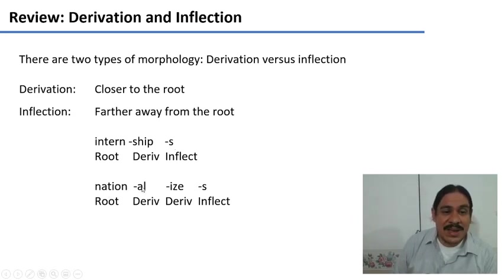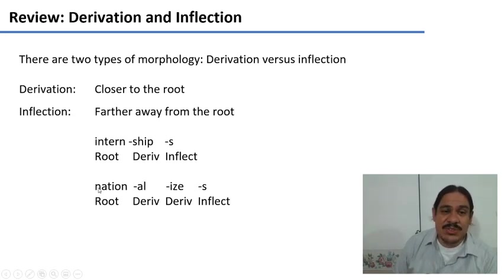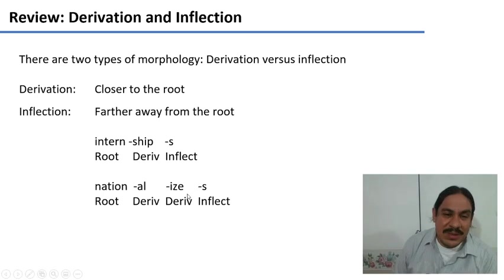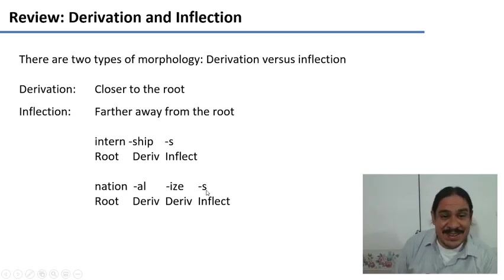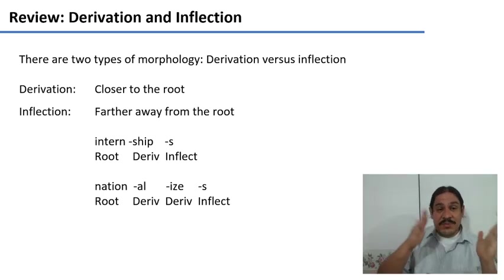'Nationalize' has one root and three suffixes. It has the root 'nation,' the derivational suffix '-al' which turns 'nation' into 'national' — changing a noun into an adjective — then the derivational suffix '-ize' which turns 'national' into 'nationalize,' changing the adjective into a verb. Only after we're done with the derivational morphemes do we have the inflectional '-s,' which tells you that someone is doing it in the third person — he, she, they. This inflectional morpheme lives farther away from the root. So these are the two kinds of morphology: derivational and inflectional.